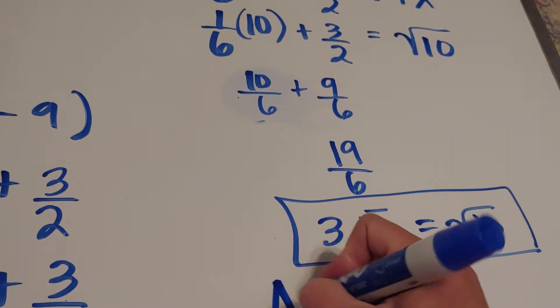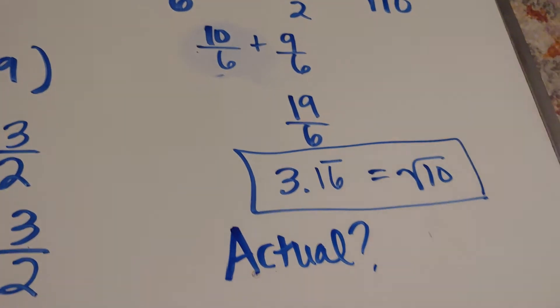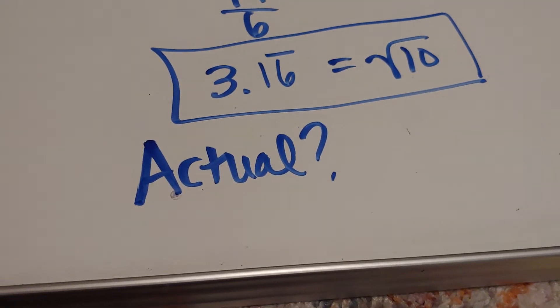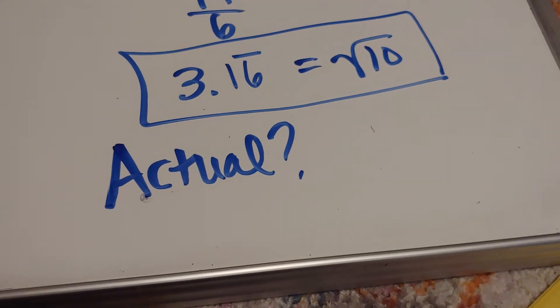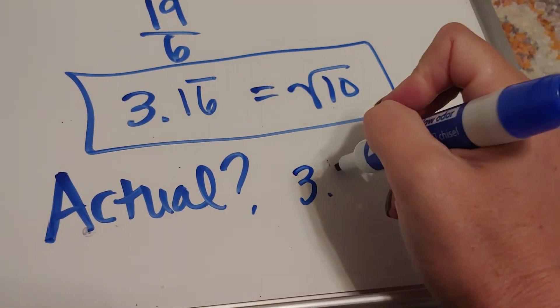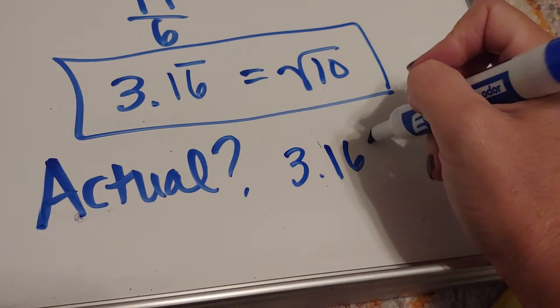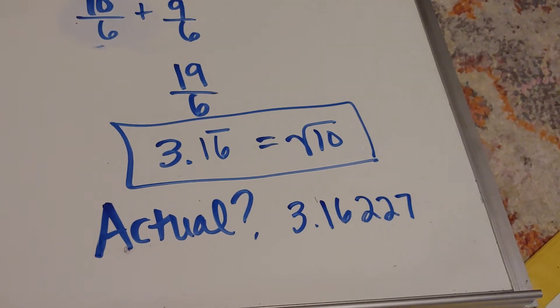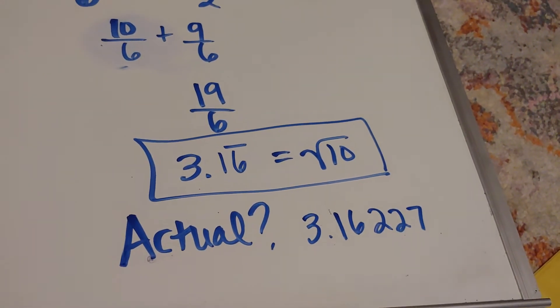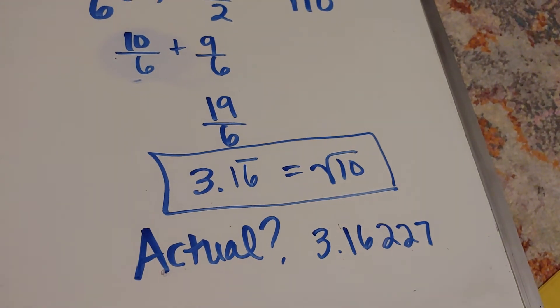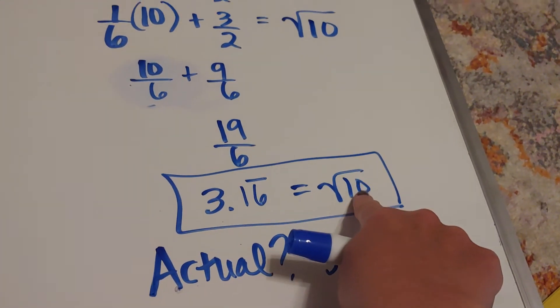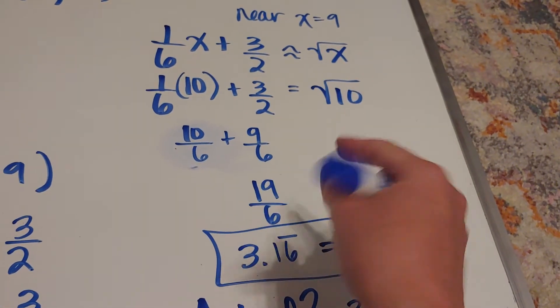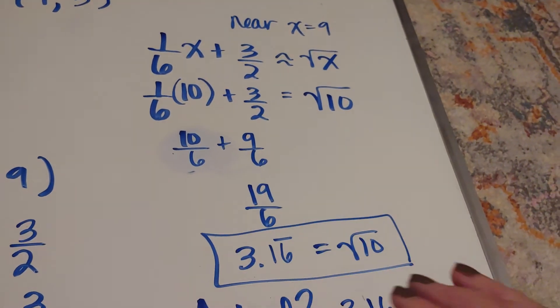Now, what is the actual? The actual is just take your calculator and figure out what the square root of 10 is. If I plug in the square root of 10, I get 3.16227. So we're really stinking close. That should happen because we stuck close to our value of nine.